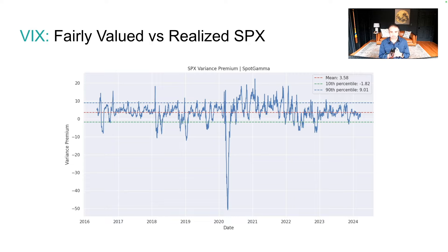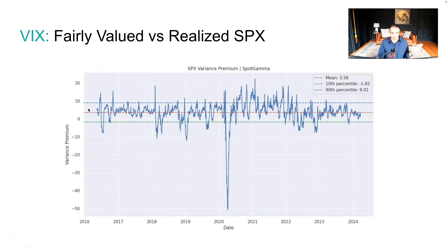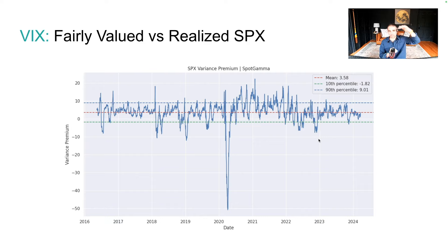This chart is a concept put forth by Euan Sinclair in his books. What you can see is the VIX versus one-month SPX volatility, and the spread between those two is at the average — shown by the red line. There are times where that premium can increase if people are scared about what's about to happen in markets, or that premium could shrink or go negative.